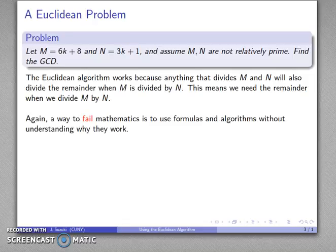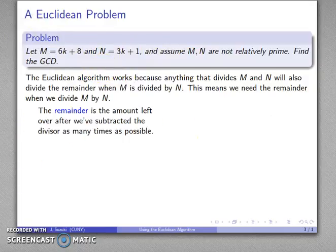Well, again, another way to fail mathematics is to use formulas and algorithms without understanding why they work. There is a division algorithm. There is a way that we can divide two numbers. But how do you apply it to something like this? Well, again, we want to go back to why that algorithm works. And in particular, because I need the remainder, it's the amount that I have left after I've removed the divisor as many times as possible, after I've subtracted it. So I can do division by repeated subtraction.